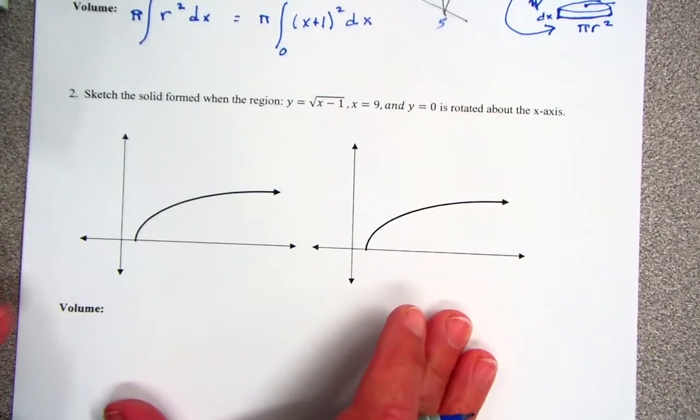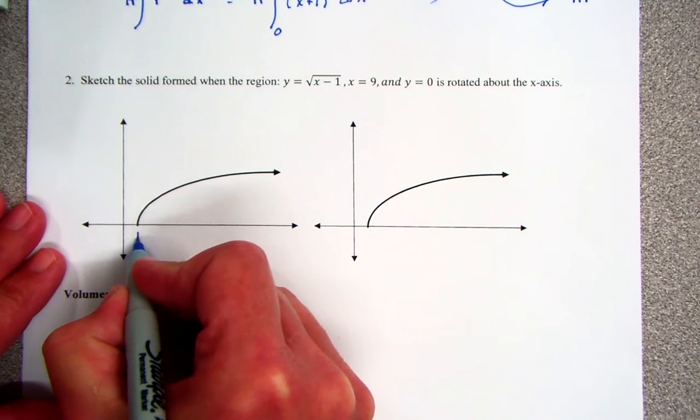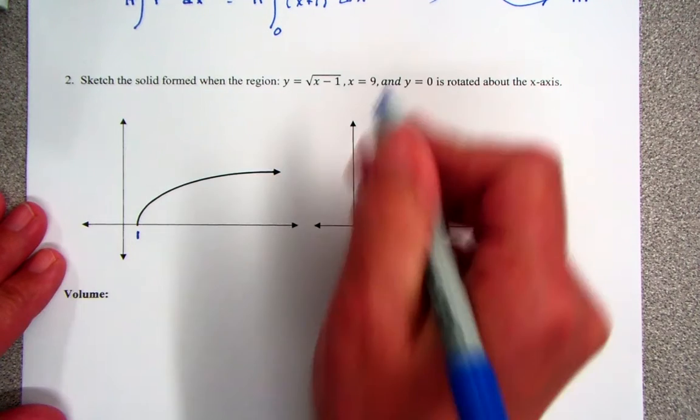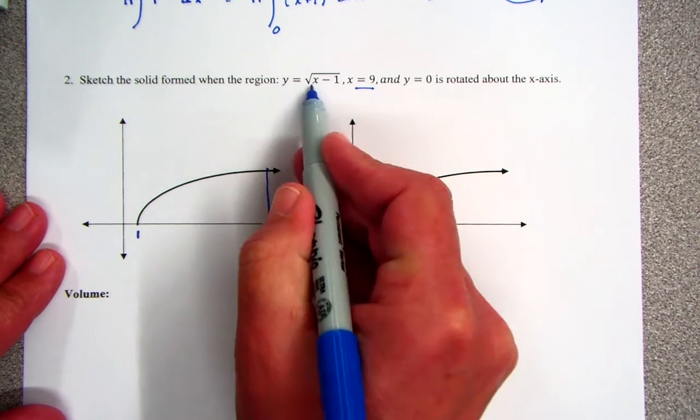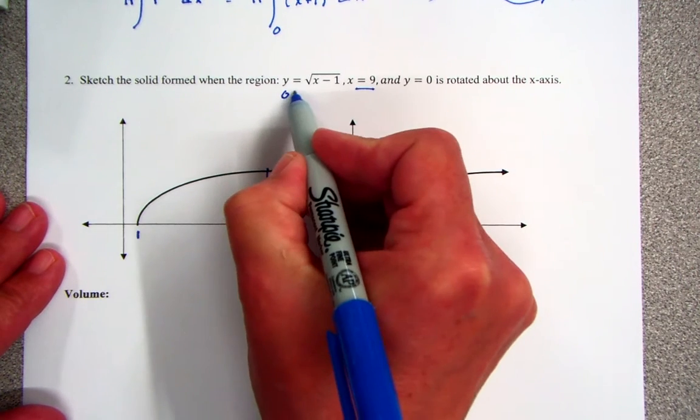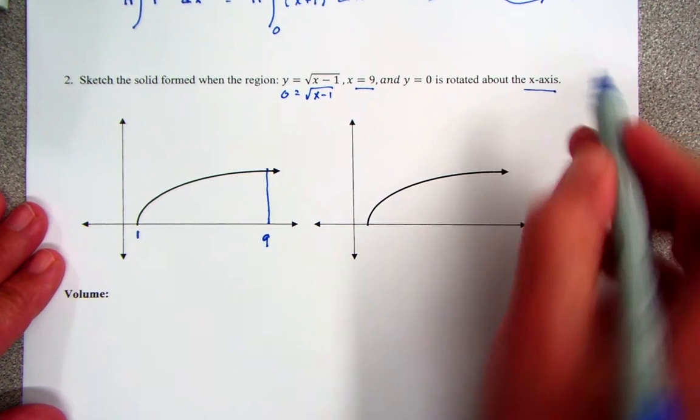This is the square root of x minus 1. So this is 1. I'm going to take this to 9. And you might ask, how did you know that was 1? Well, if y is 0, and I'm looking for the x value, I can see that it is 1. I'm going to again rotate this around the x-axis.